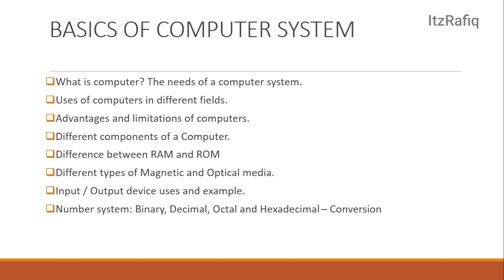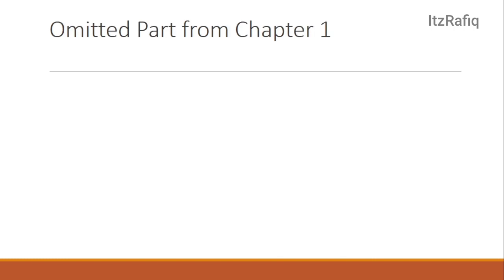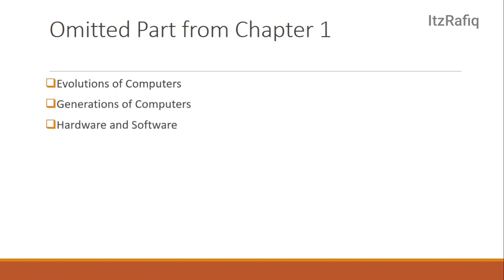See the examples from the book and practice the sums. You can also check my video where I have already explained the number system. From Chapter 1, a few parts are omitted due to COVID: evolution of computers, generation of computers, hardware and software, and performance measurement of computers — these four topics are removed for this year. You can exclude them from your examination preparation. Also, this chapter has many short questions like MCQ, fill in the blanks, and one-word answers — see all of them, as they might come exactly the same in your examination.